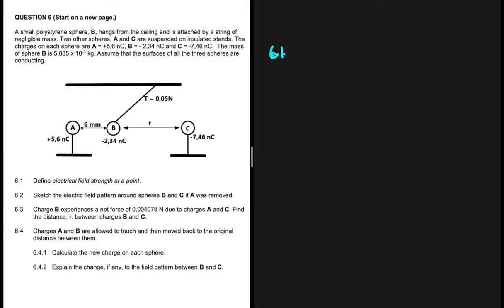The answer to 6.1. Now let's look at 6.2. 6.2 is saying that let's sketch the electric field pattern around spheres B and C if A was removed.